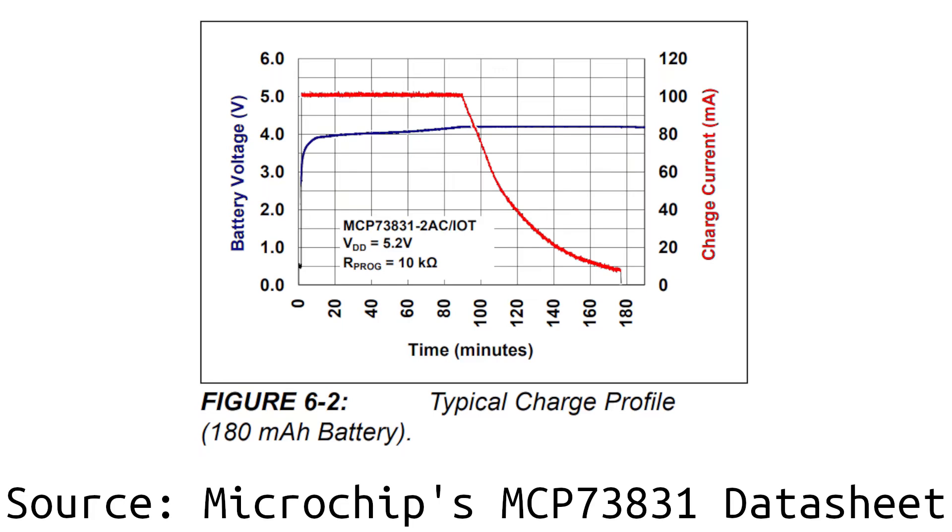For the most part, LiPo battery charging processes are fulfilled in two separate parts. The first part is in the constant current charging mode. In this mode, the charger applies a voltage to the battery that will flow into it at a specific current, usually at 1C. And if you're wondering what a C is, it basically equals the capacity of the battery.